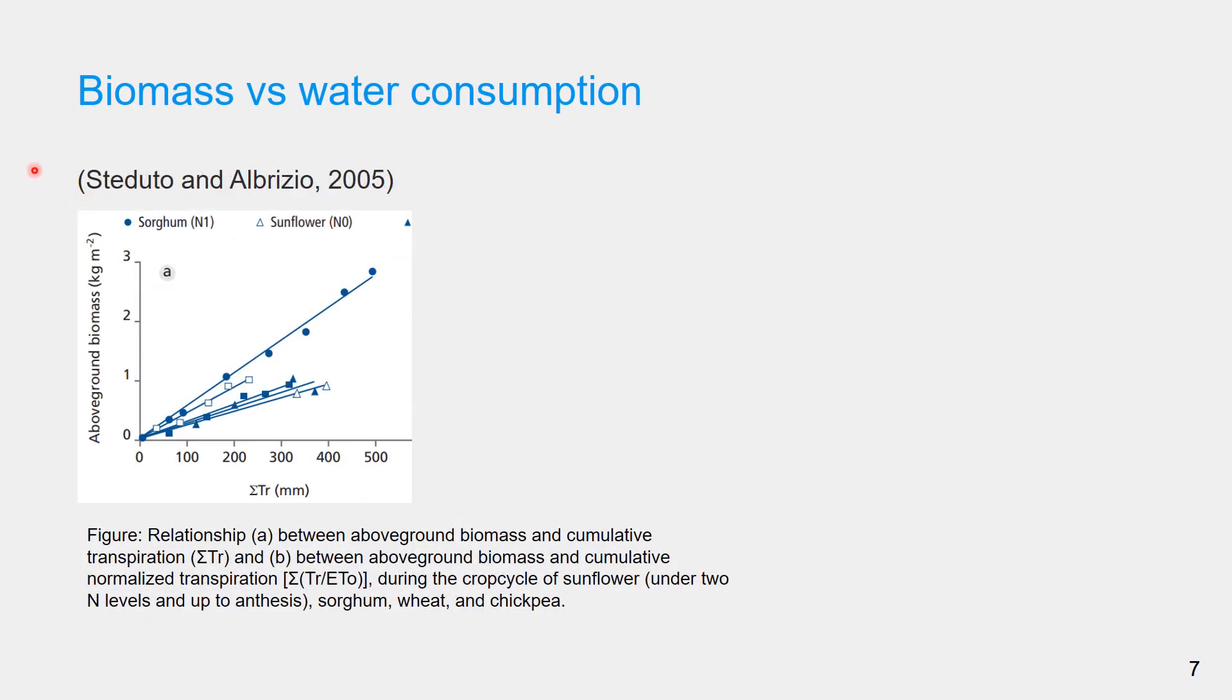Recently, Stodito showed a linear relationship to exist between above ground biomass in the y-axis and cumulative transpiration in the x-axis for different crops under two nitrogen levels, optimal and suboptimal. The linear relationship was maintained even after the transpiration was normalized by reference evapotranspiration, under optimal condition and under these two nitrogen levels.